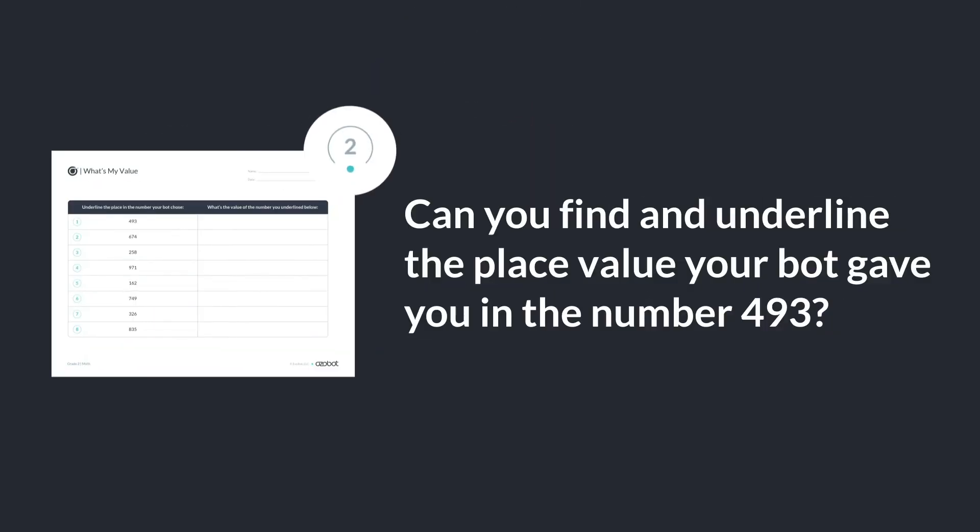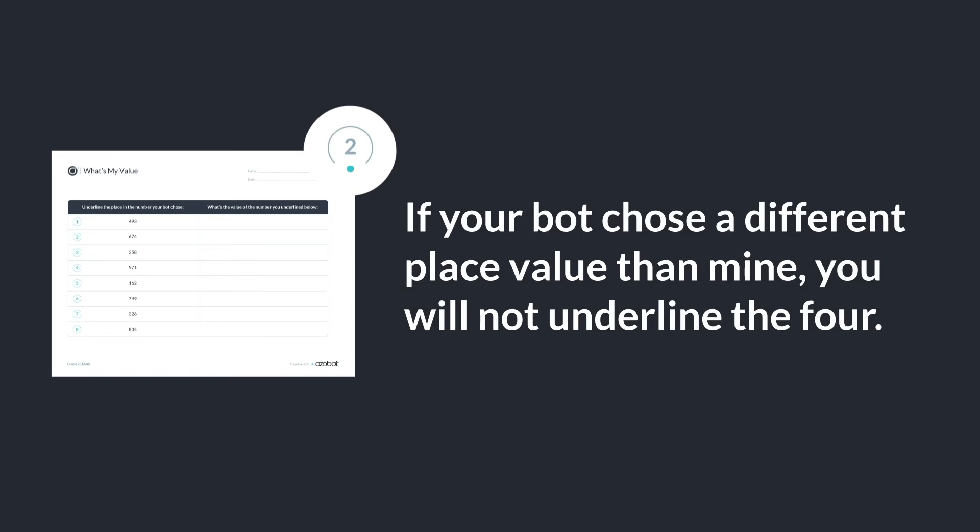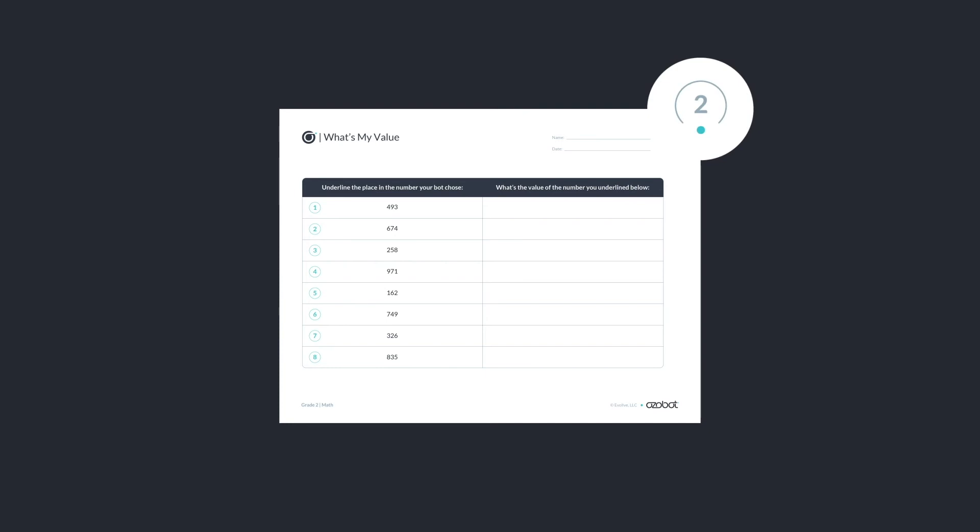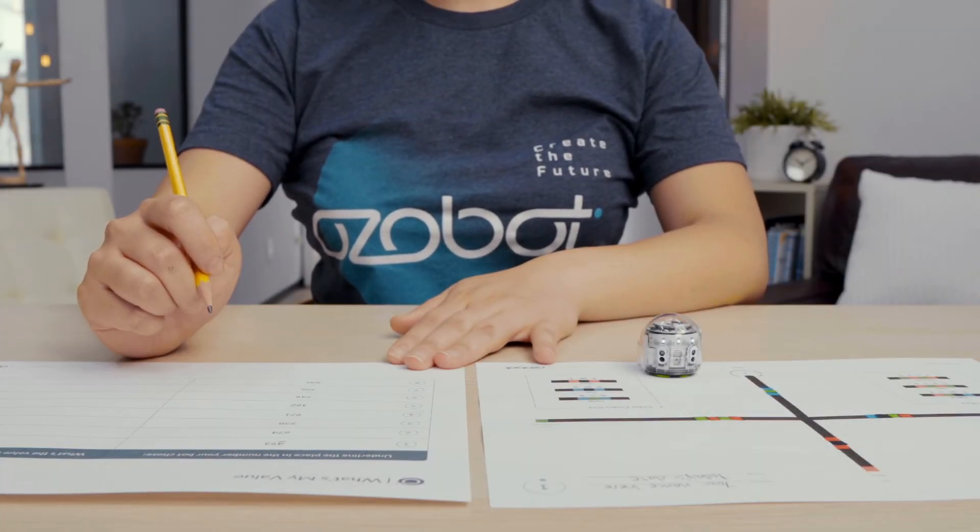Can you find and underline the place value your bot gave you in the number 493? If your bot chose a different place value than mine, you will not underline the 4. Great job finding the place value your bot gave you.